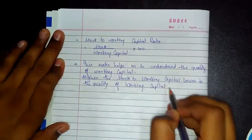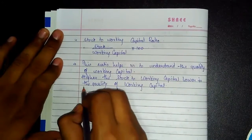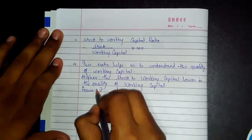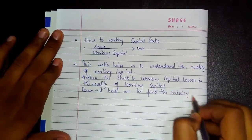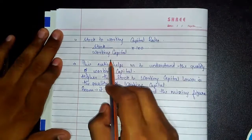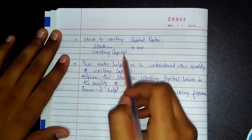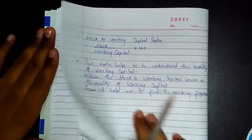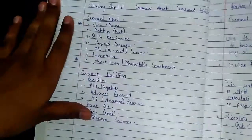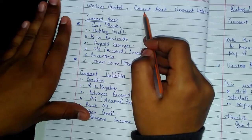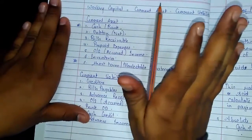We won't get into detail on that as it's not part of our syllabus. The importance of this formula from an exam point of view is that it helps us find missing figures. If stock is given, we can find working capital using the Stock to Working Capital ratio. Also, if working capital and current liabilities are provided, we add current liabilities to working capital to get current assets.